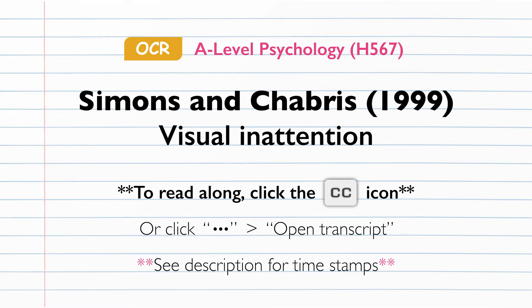The study was a laboratory experiment which used an independent measures design, with participants taking part in only one of 16 different conditions. The groups included: one, the transparent umbrella or gorilla conditions; two, the opaque umbrella or gorilla conditions. Each of the groups were then subdivided into: three, white shirt easy or hard; and four, black shirt easy or hard.